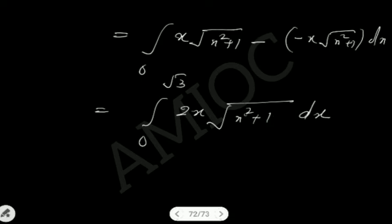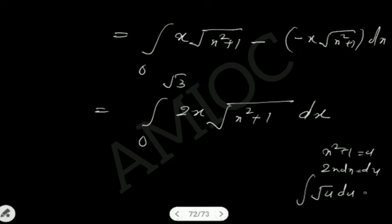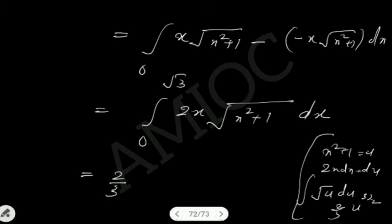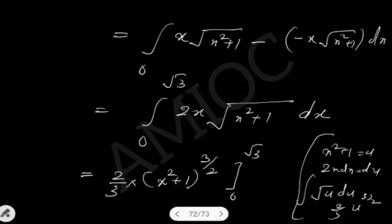Now we integrate from 0 to root 3 of 2x times root of x squared plus 1 dx. Let u equal x squared plus 1, so the derivative gives 2x dx equals du. The integral becomes root of u du, which equals u to the power 1/2, integrating to give u to the power 3/2 divided by 3/2, that is 2/3 times u to the power 3/2.